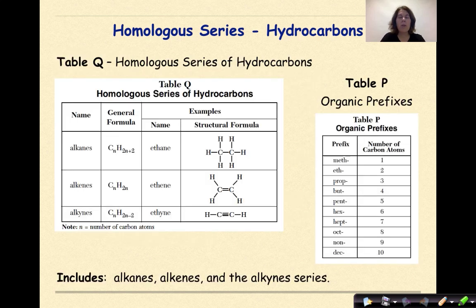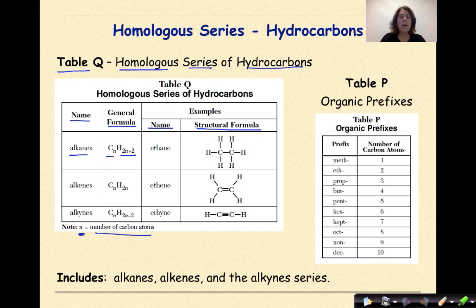You have two reference tables you're going to be using extensively in organic chemistry. The first is Table Q, which is our table for the homologous series of hydrocarbons. It gives you the name, the general formula, the name of an example compound, and the structural formula. For an alkane, the general formula is CnH2n+2, where n represents the number of carbon atoms. Ethane, with an -ANE ending, has all single bonds between the carbons.